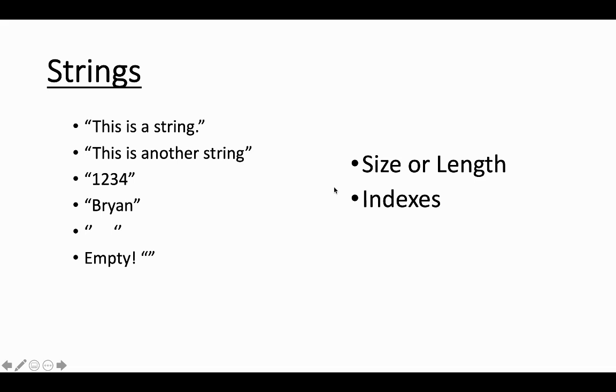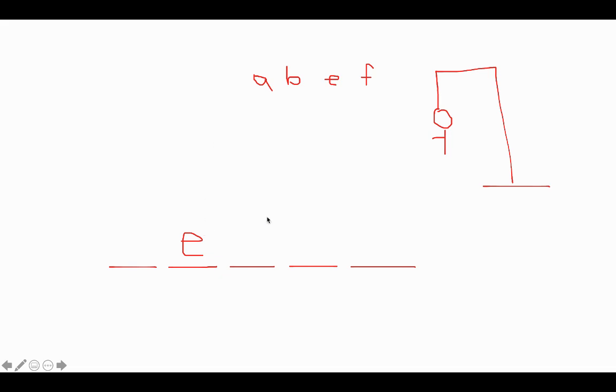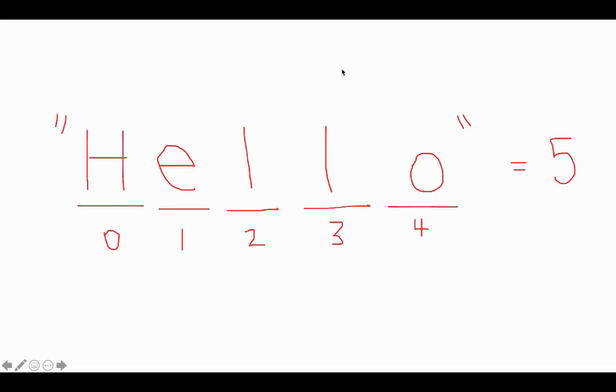So there's two different properties that are important with strings. One is the size or length of the string, and one is the indexes. I like to think of indexes as the blanks when you're playing hangman. So if this word in hangman was a string, then it would have one, two, three, four, five indexes or five blank spaces that each one corresponds to a character. So the tricky thing about indexes though is that the first index is always zero.